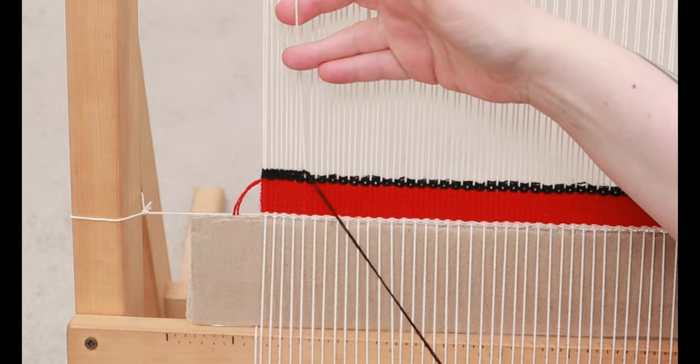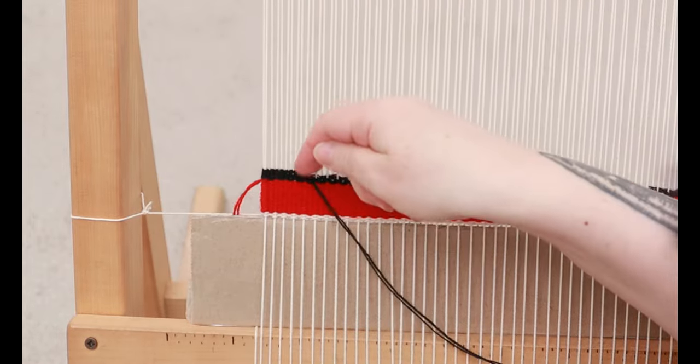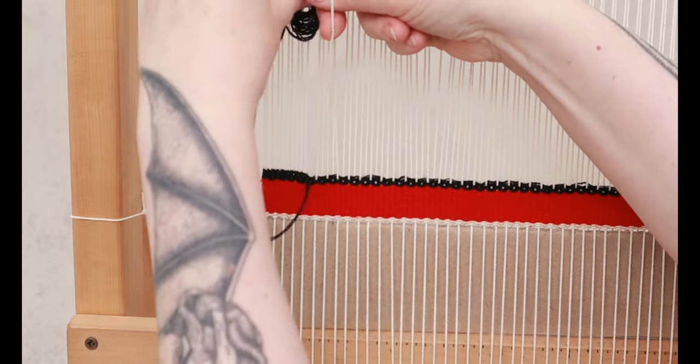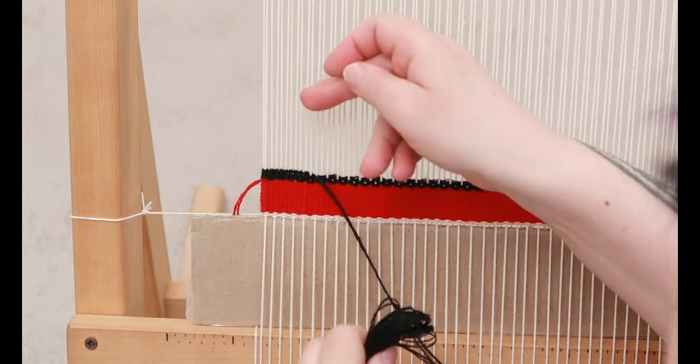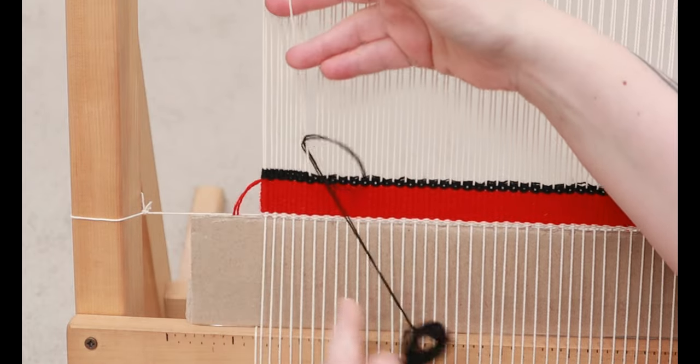I'm going to go very slowly with my double half hitches here. I'm assuming if you're a tapestry weaver you probably already know how to do double half hitches, but if not, I'm sure you can Google it and find a much better tutorial than mine.